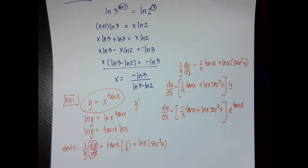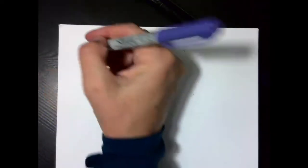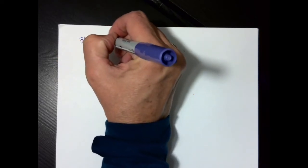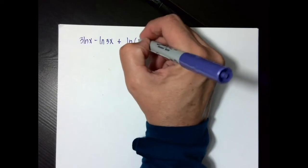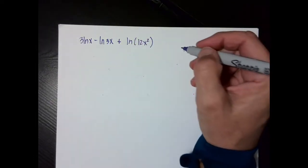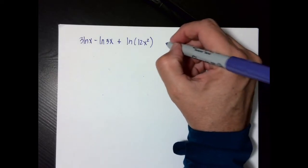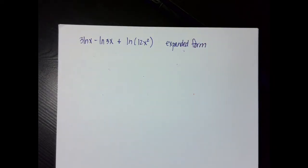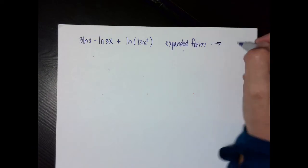So here's what I want you to look for: if it looks like the thing is complicated, we want to use our properties of logarithms to help do some complicated math. Before we do our next example, I want to remember some properties of logarithms. So if I'm given 3 natural log x minus the natural log of 3x plus the natural log of 12x squared, this is called expanded form.